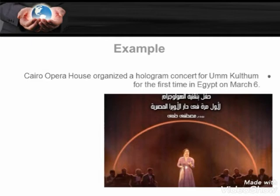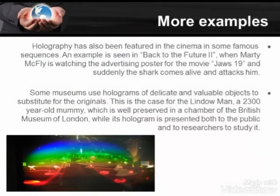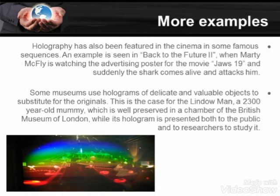Our first example of the hologram is the Cairo Opera House, which organized a hologram concert for Umm Kulthum for the first time in Egypt on March 6th. The second example is holography featured in cinema — for instance, in Back to the Future Part 2, when Marty McFly is watching an advertising poster for the movie Jaws 19 and suddenly the shark comes alive and attacks him.